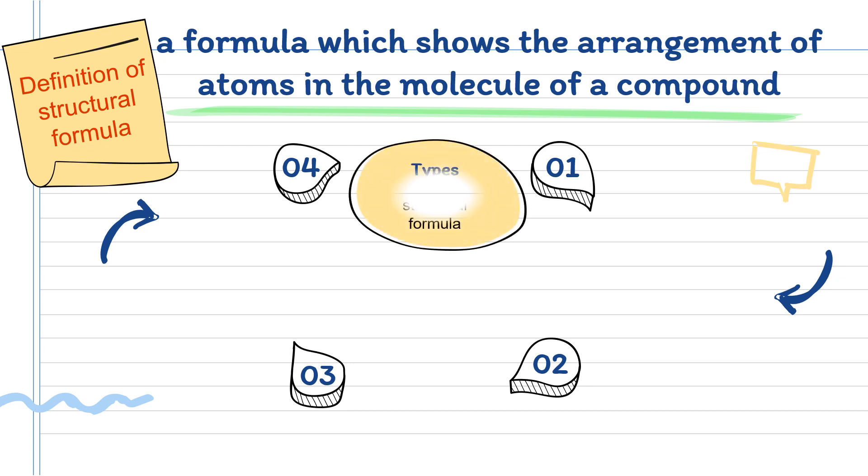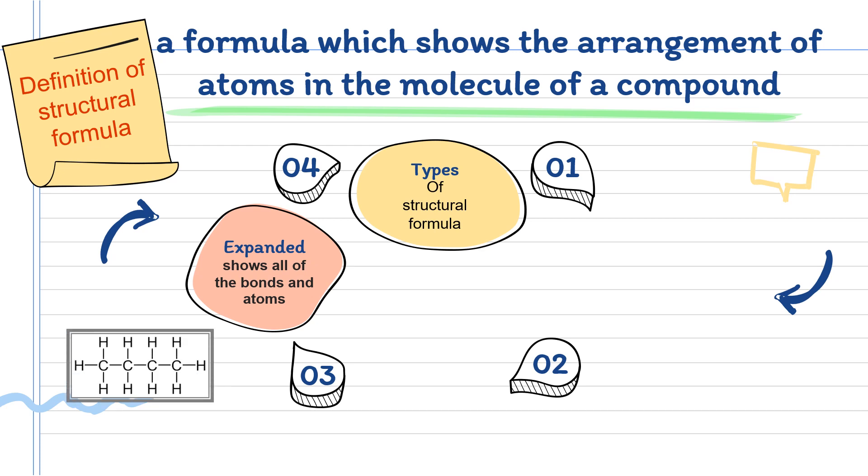There are three types of structural formula. The first one is expanded structural formula, where the expanded structural formula shows all the covalent bonds between the atoms. It is better for you to remember that carbon forms four covalent bonds.